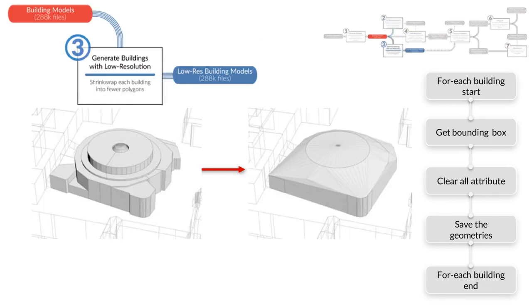In step 3, a low-resolution model is generated for each building by shrink-wrapping the building, as shown in the figure. These shrink-wrapped buildings are used later in order to speed up the simulation.